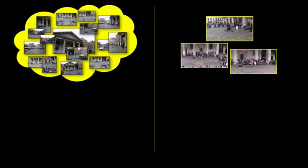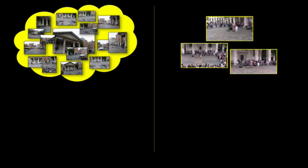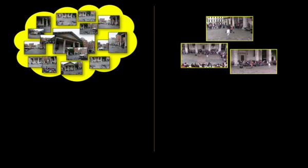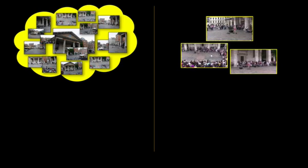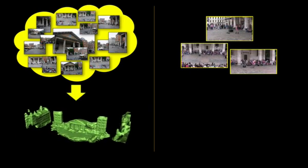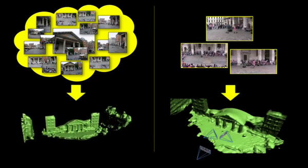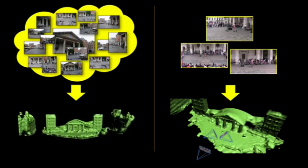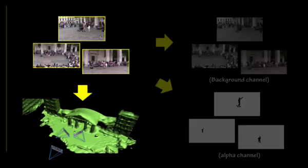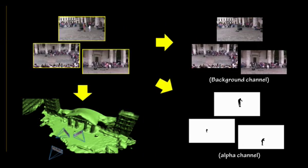One can only make weak assumptions about the robustness of these techniques on casually captured footage of a real event. Accepting that the pre-processed footage will have some serious imperfections, we succeed with only a small amount of user interaction in constructing textured background geometry from a small set of photos, spatially calibrating each of the video cameras, and segmenting the main performer in each view, at least as much as necessary for the rest of our rendering pipeline.